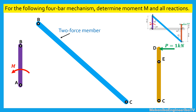Consequently, the reactions in B and C have the same direction as the bar BC and should balance each other. The force FBC in C is applied from the bar CED on the bar BC. Thus, the bar BC applies on the bar CED the same force FBC in C but in the opposite direction. The bar CED is connected to the ground using a rotating kinematic pair. Therefore, two reactions EX and EY are applied in E from the ground on the bar CED.